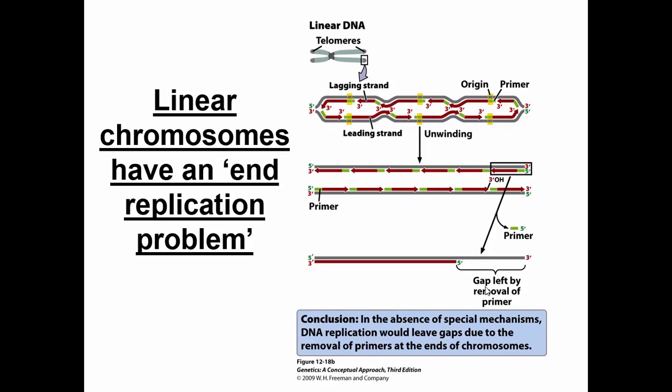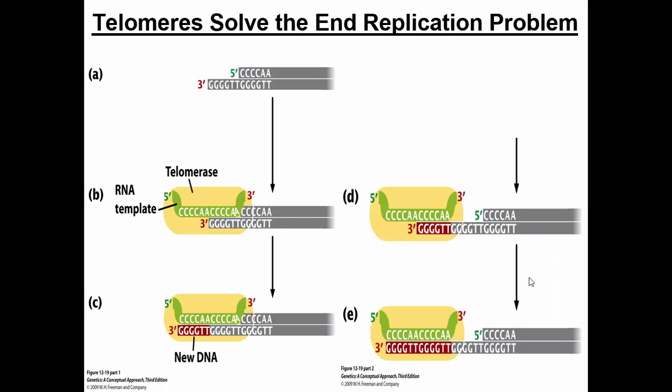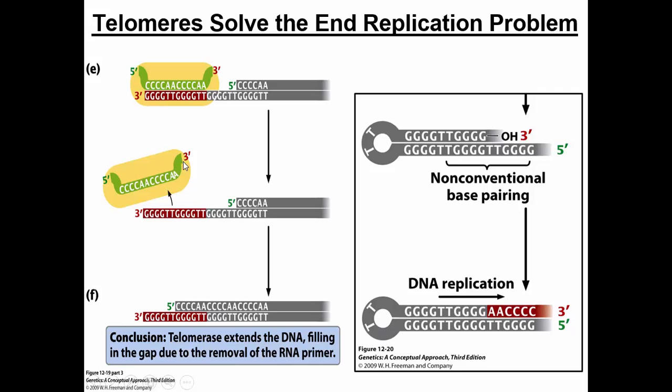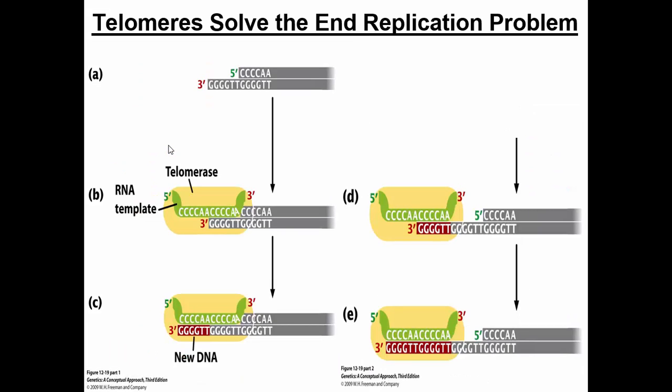One final thing to consider is the end replication problem. At the very end of the chromosome, a gap forms when a primer is removed but there is no free three prime hydroxyl to allow polymerase to finish replicating the DNA. This is solved by an enzyme called telomerase. Telomerase is half nucleic acid and half protein — it has an RNA template and a protein structure. What telomerase does is hybridize to the DNA overhang on the bottom strand, allowing DNA polymerase to hop on and extend that strand.